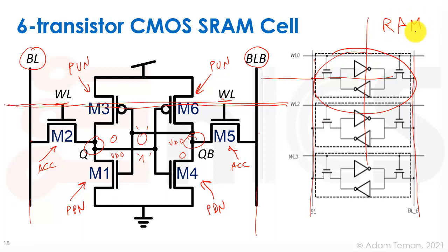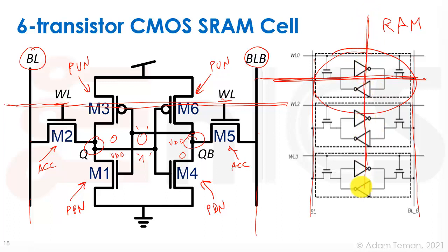We can randomly access any single cell by selecting a single word line and accessing a single bit line. That's our basic 6T SRAM cell, which we'll discuss in more detail in the next parts of the lecture.